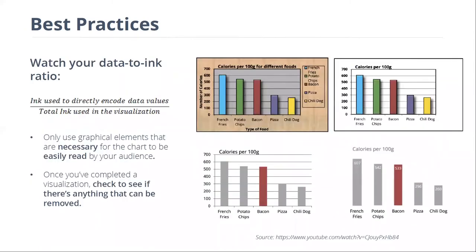We also want to look at our data-to-ink ratio — how many graphical elements we have in a chart and how many are actually representing data. In this first chart, there's a crazy background, rainbow colors, and drop shadows. We take away the background, we take away the legend since we've already got everything labeled — the legend is just labeling it twice. We take away the drop shadows and those unnecessary rainbow colors. We've kept one color to highlight one bar to bring attention to it, but otherwise different colors weren't representing any type of information.